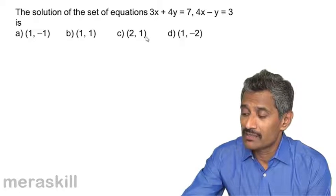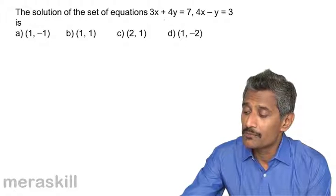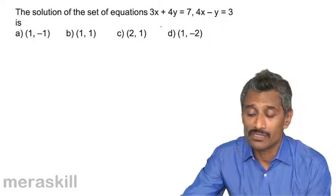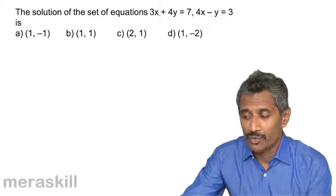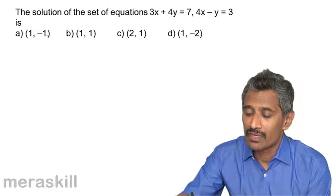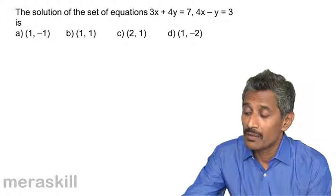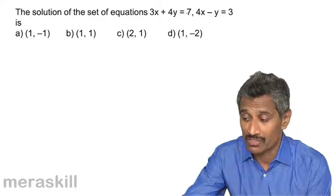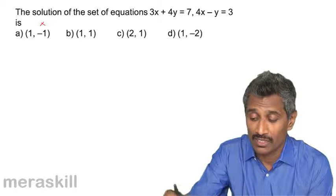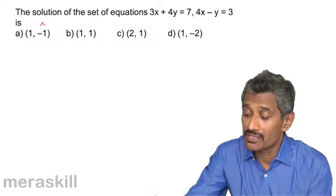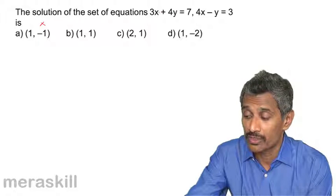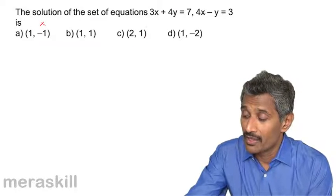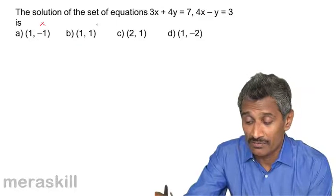For example, let's take this case: 3x plus 4y is 7, 4x minus y is 3. One way of doing it is to substitute the values. 1 comma minus 1: 3 minus 4 turns out to minus 3, which is not 7, so this is directly not the case. What about this: 3 plus 4 into 1 is 7, and 4 into 1 minus 1 is 3, so definitely this is the option.